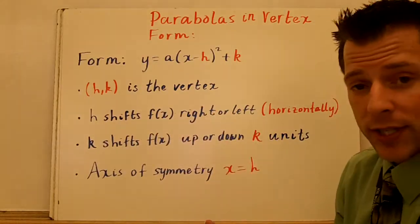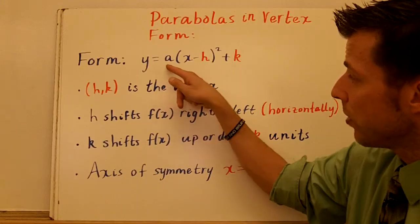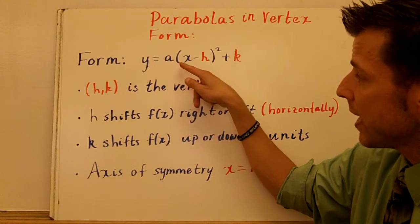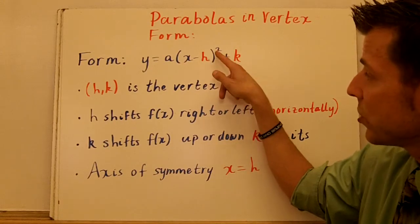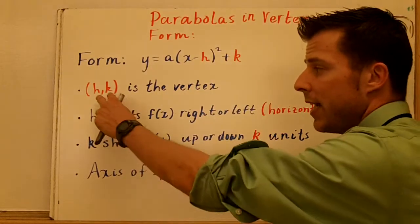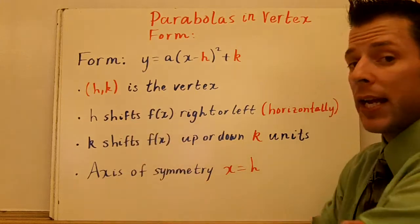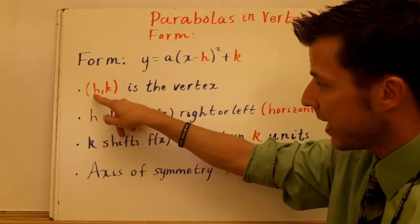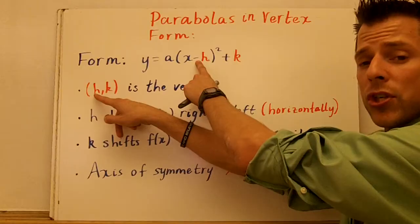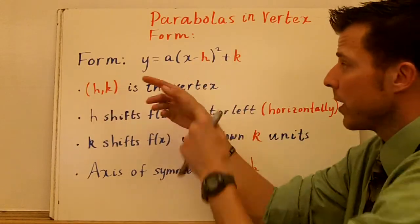H and K is the vertex. That general form is y equals a times the quantity x minus h squared plus k. H and K is the vertex. I want you to be very careful. Look at the sign of h and look at that operation. Those are going to always be opposites.